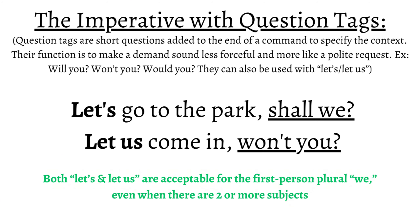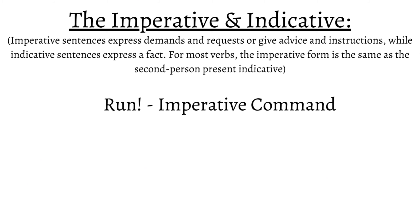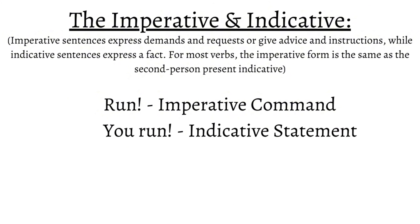Finally, it's important to understand the difference between the imperative and indicative. Imperative sentences express demands and requests, or give advice and instructions, while indicative sentences express a fact. For most verbs, the imperative form is the same as the second person present indicative — for example, 'run' is an imperative command, but it can also be indicative as in 'you run.' Both in the imperative and indicative, 'run' stays 'run' and doesn't change.